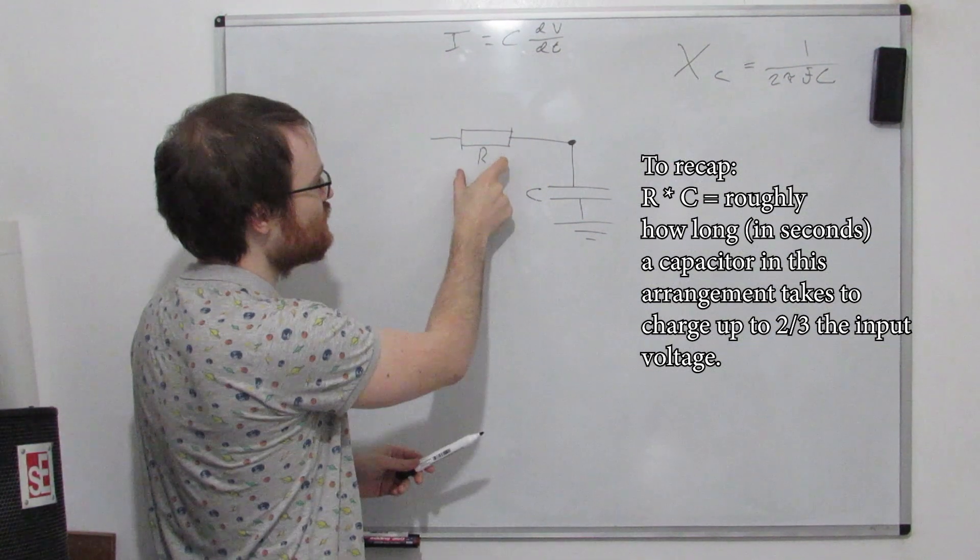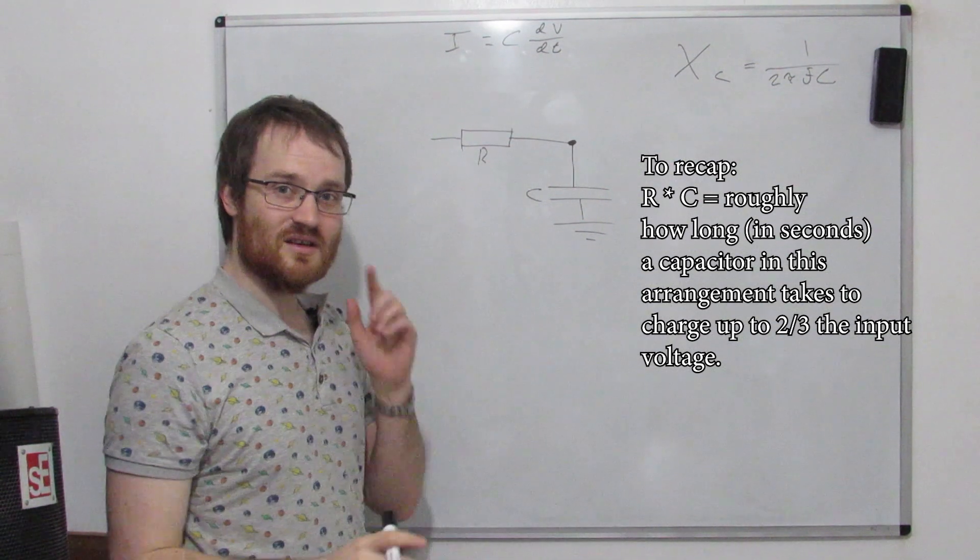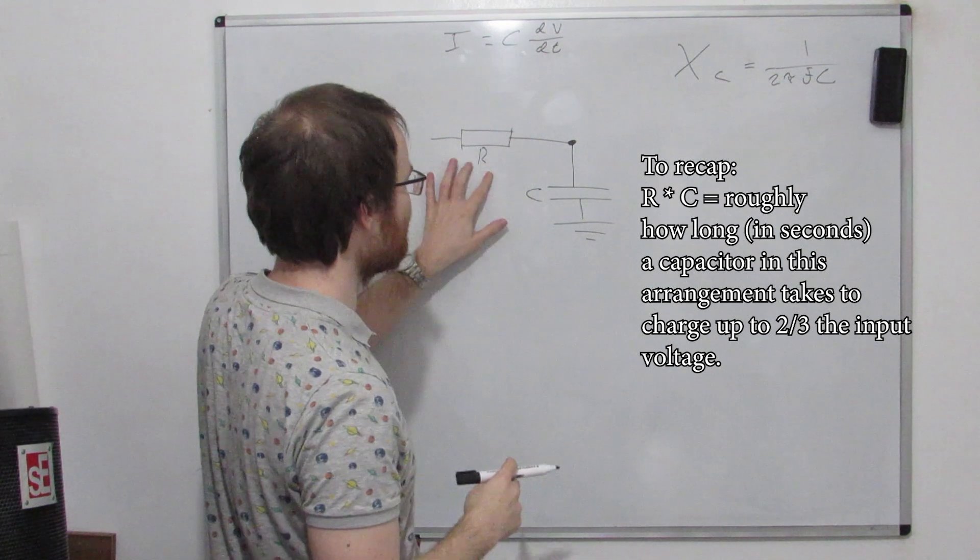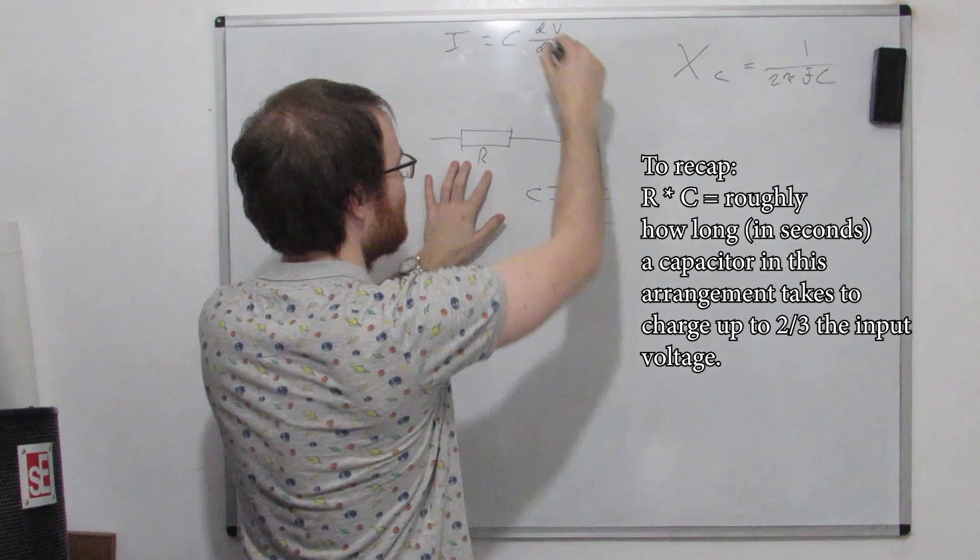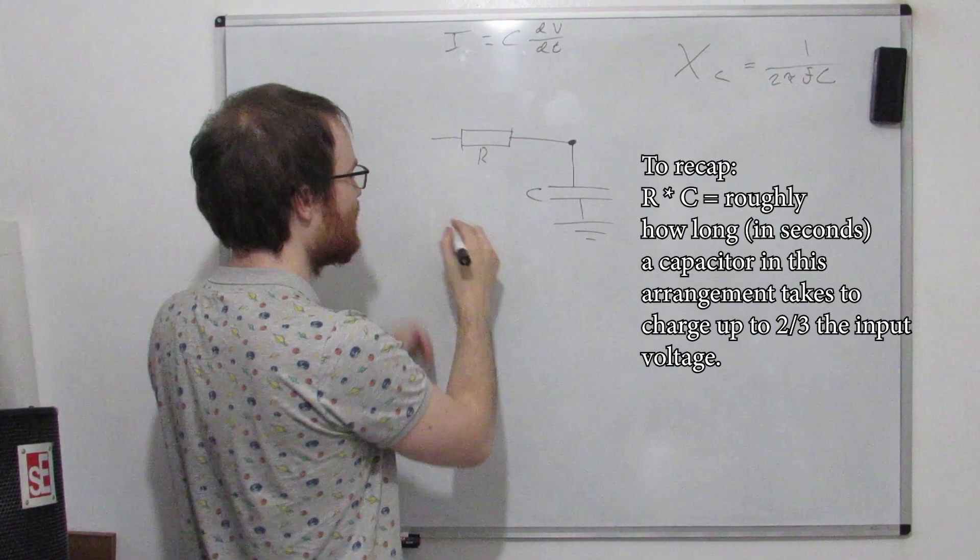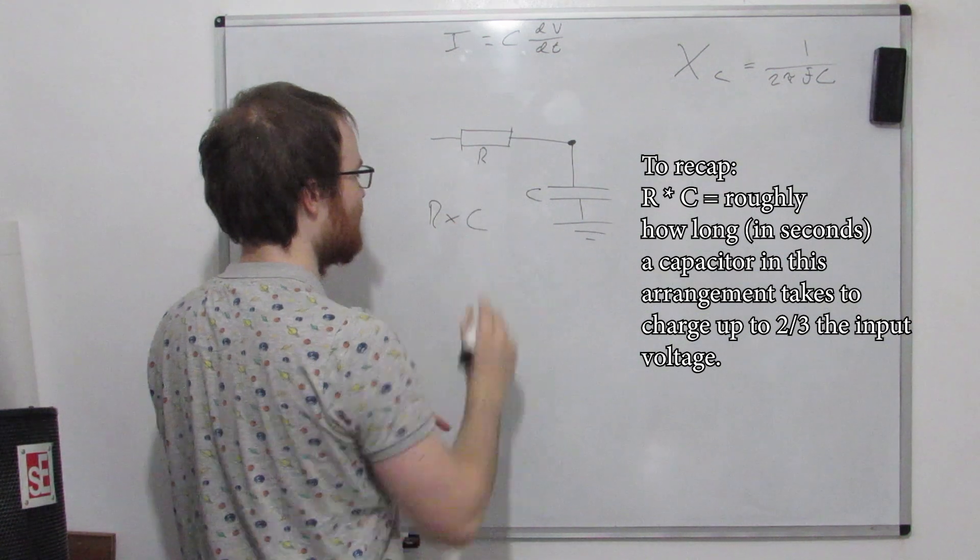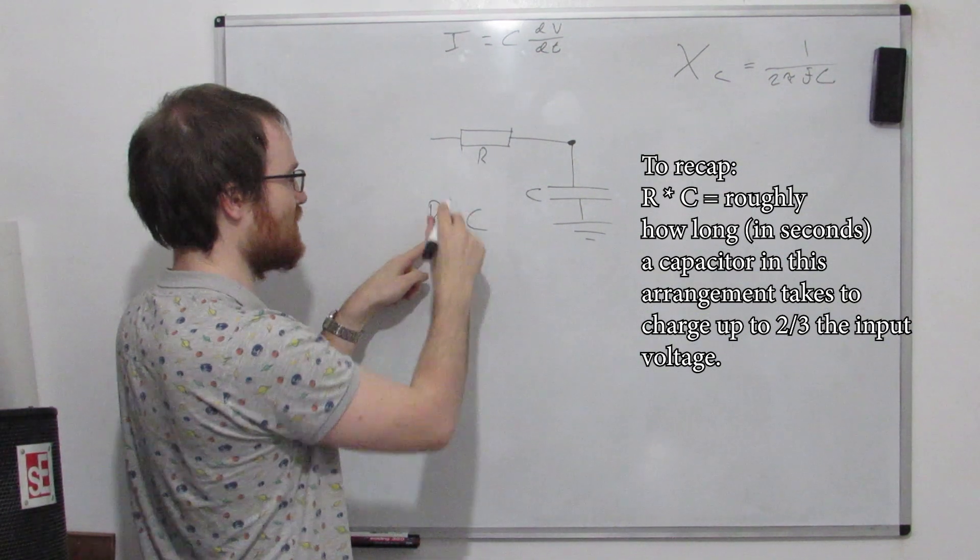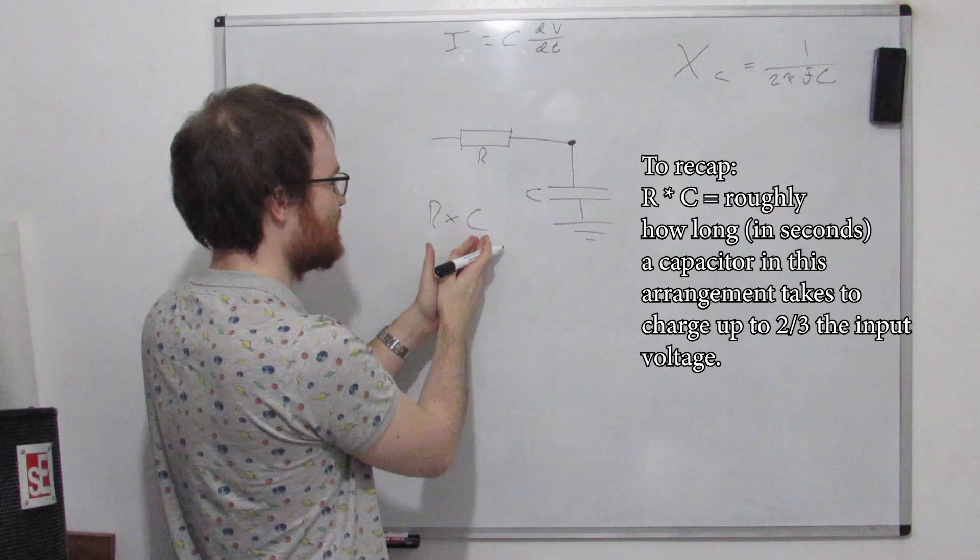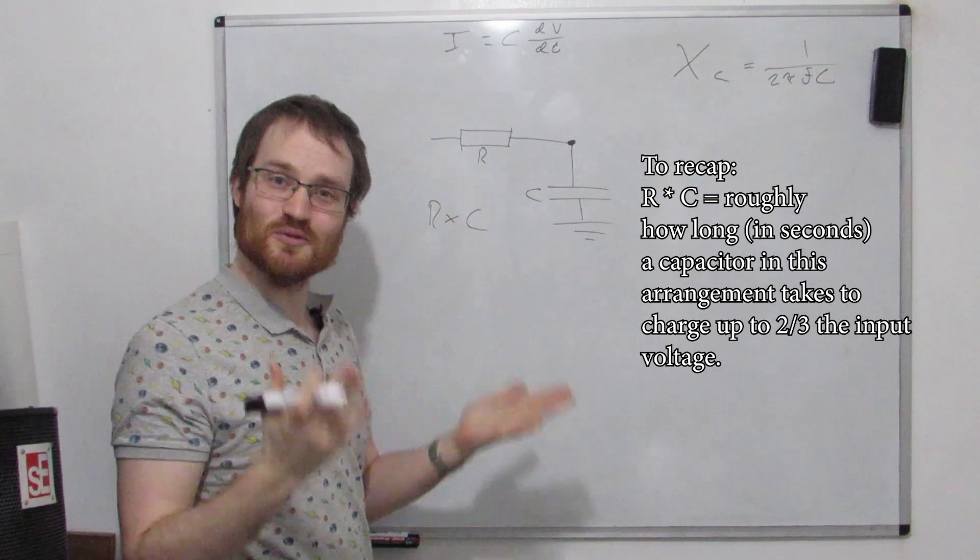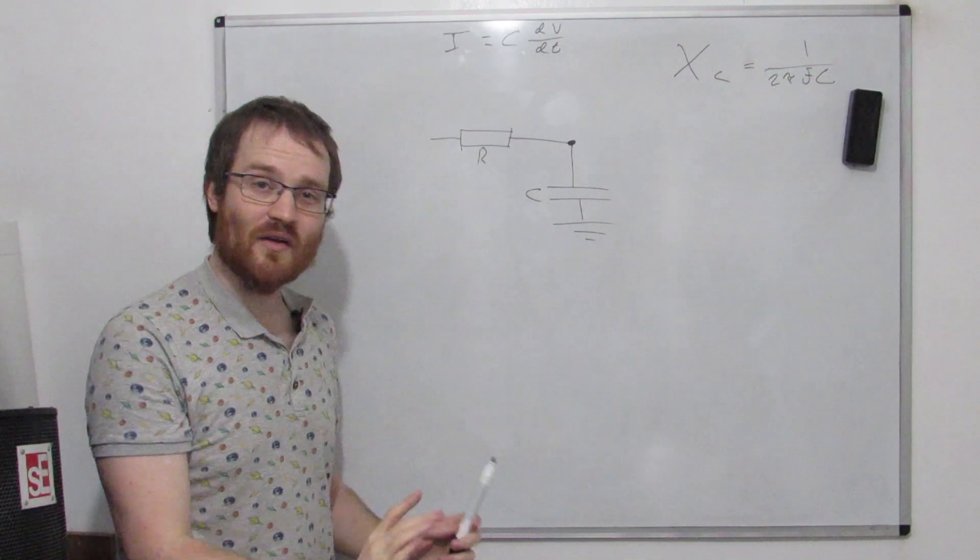And so we know less resistance gives us more current. So the smaller this is the quicker this will charge up and also the smaller that R times C will be because as this resistance value falls, the value of C times this smaller value also falls. Let's not worry about values and things.